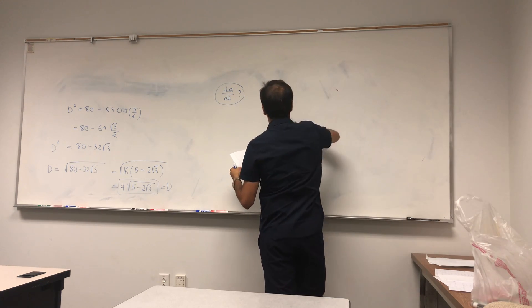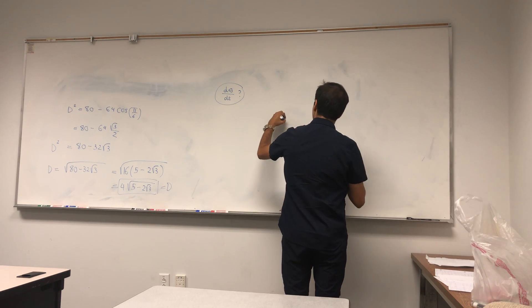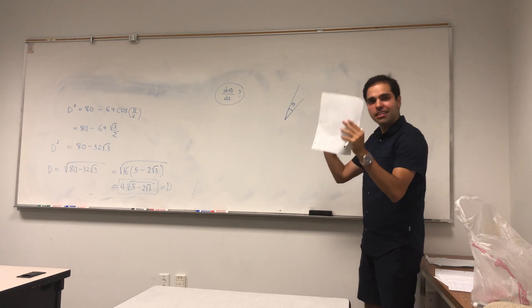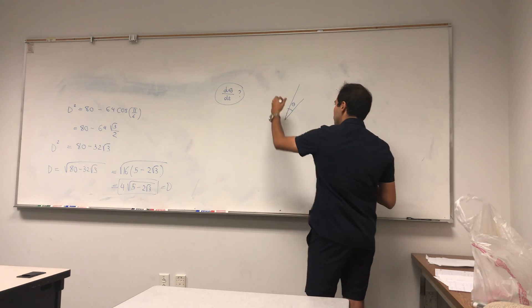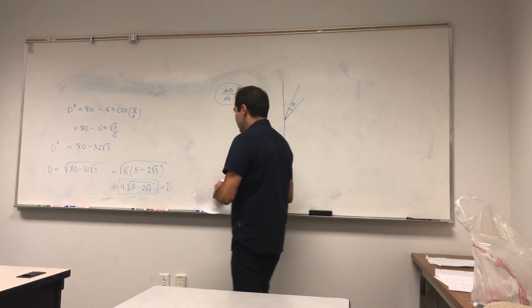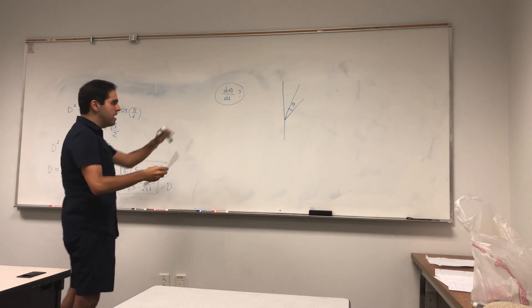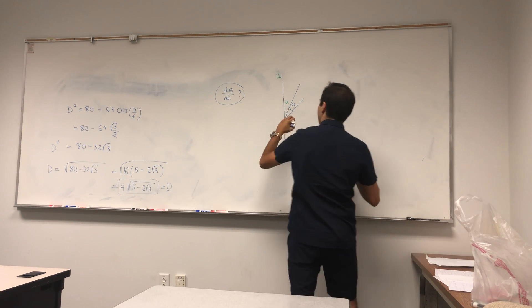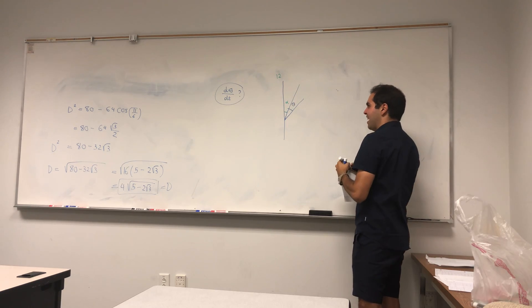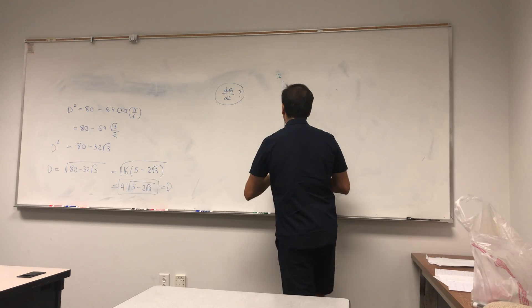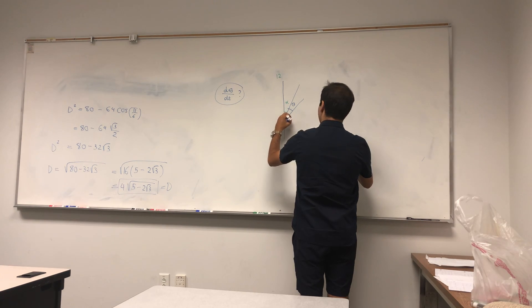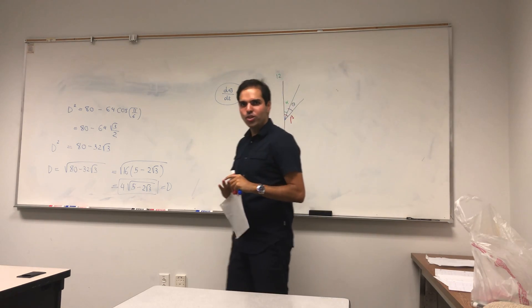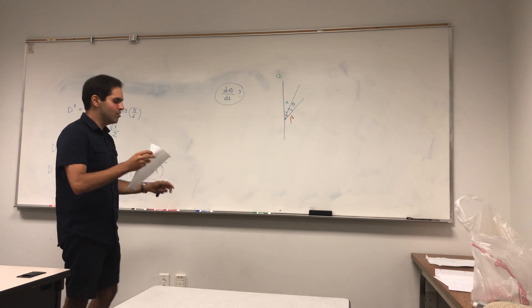So again, let's redraw this picture. Actually, not redraw this picture, let's just choose a random picture. So suppose this is the minute hand and this is the hour hand, and this is the angle theta. Again, the problem is the minute and the hour hands, they're both moving. So in order to have something more fixed, consider the angle that the minute hand makes with the 12 o'clock. So if this is 12 o'clock, let alpha be the angle between 12 o'clock and the minute hand, and let beta be the angle between the hour hand and 12 o'clock.